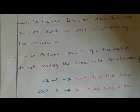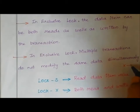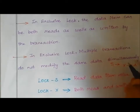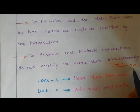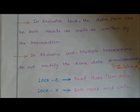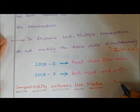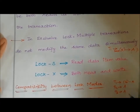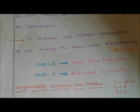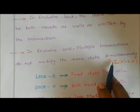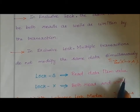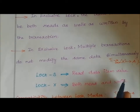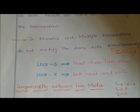When an exclusive lock is given to one particular transaction for a data item, only that particular transaction can access that data item. For example, if transaction T1 holds an exclusive lock for data item A, no other transaction can access data item A. With Lock(S) you can only read the data item value, but with Lock(X) both read and write operations can be performed.